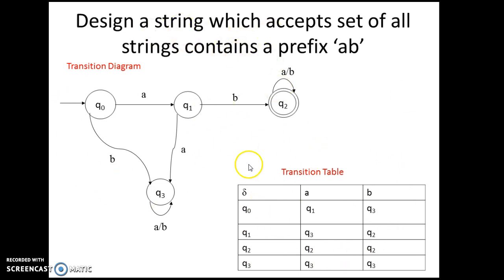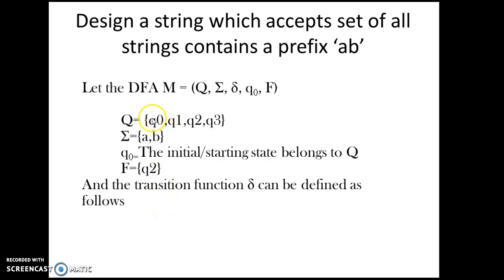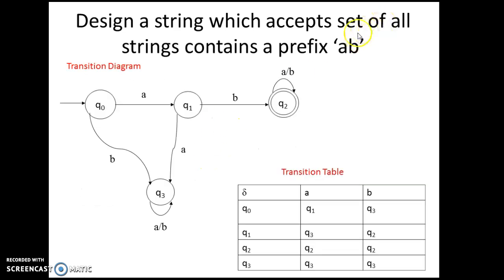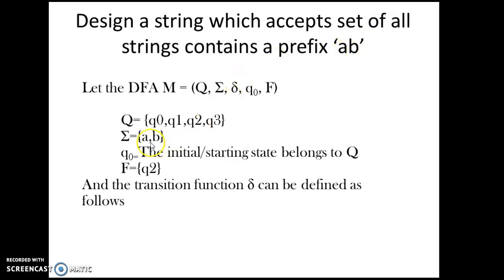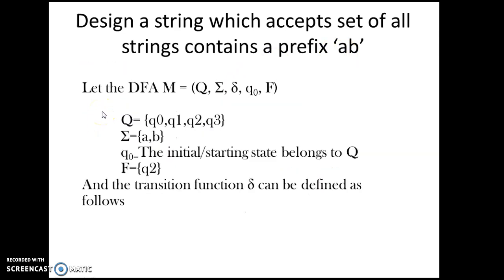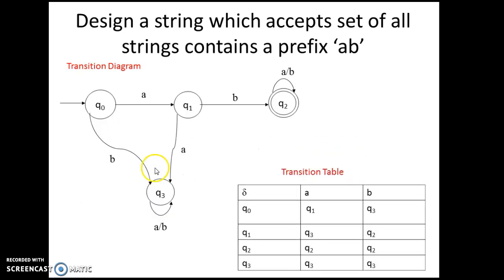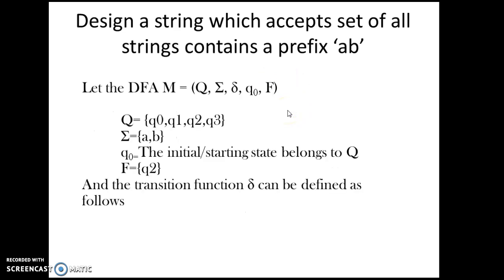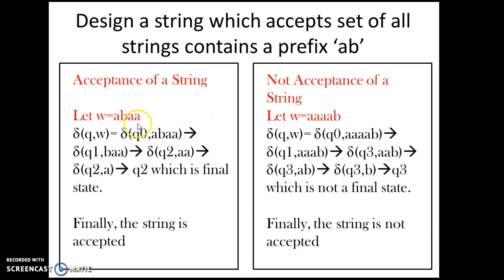After designing the transition diagram, we have four states: Q0, Q1, Q2, Q3. The input symbols are A and B. The initial state is Q0. The final state, represented by double circle, is Q2. Now you can check whether the machine accepts or rejects a given string.